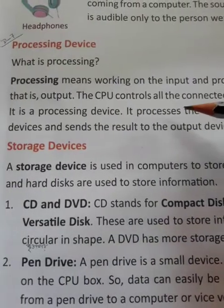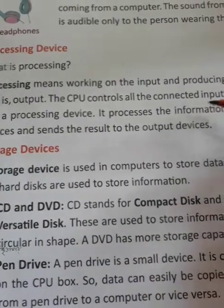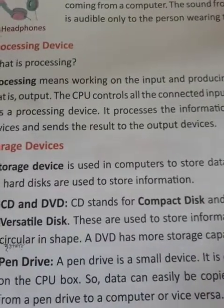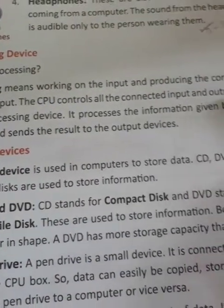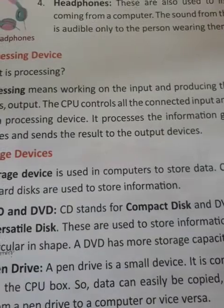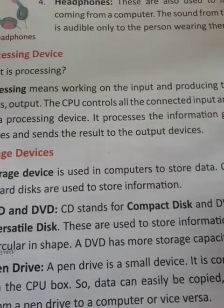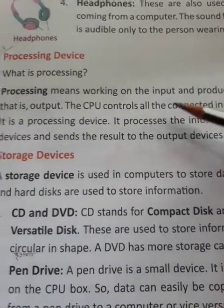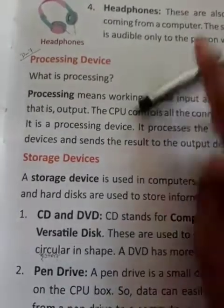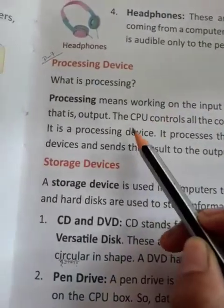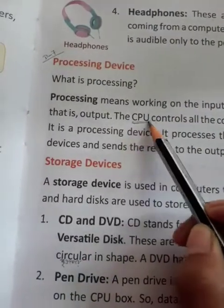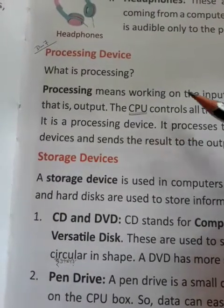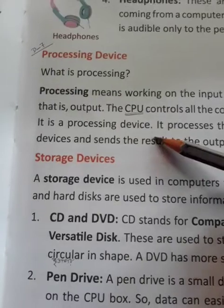The CPU controls all the connected input and output devices. The input and output devices can be connected to the CPU. CPU is a full form of Central Processing Unit. It is a processing device.